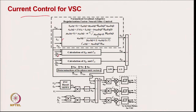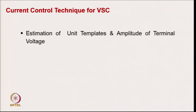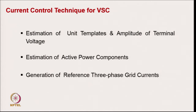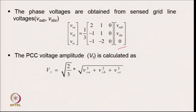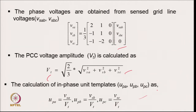In grid-connected mode we use current control. We sense the load and extract the fundamental component of the load current, then calculate the template from the sensed line voltage and phase voltage. We have the maximum power feed-forward term and the battery component for power exchange. This gives us the amplitude of the grid current. With the template, we generate a reference grid current and compare it with the sensed grid current to control the converter, improving power quality on the grid side.